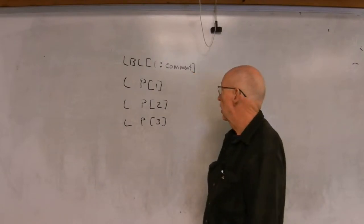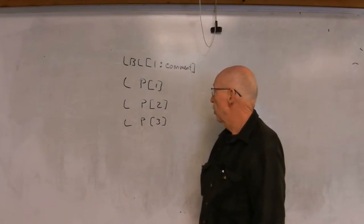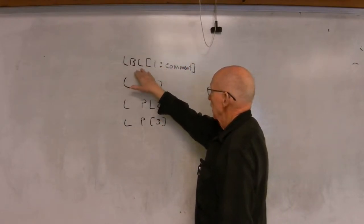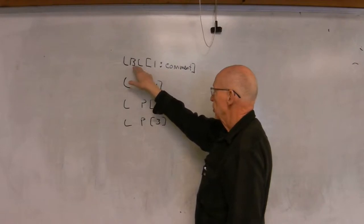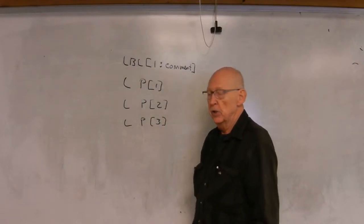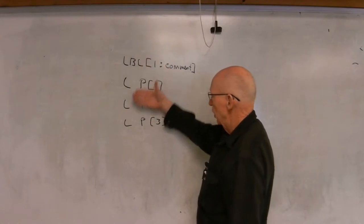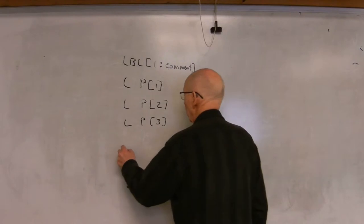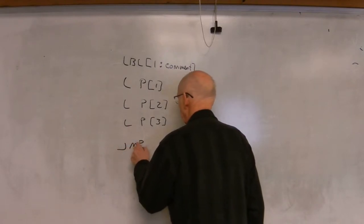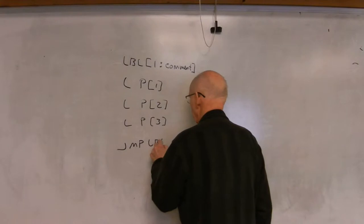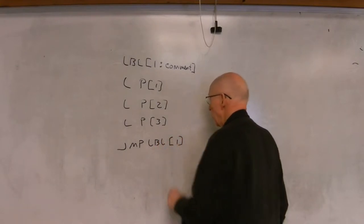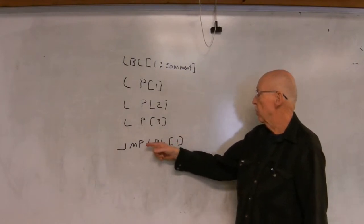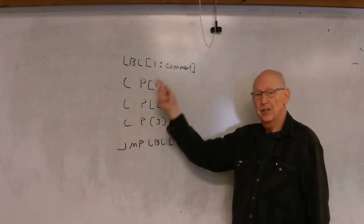So when the program executes, it doesn't really do anything, it just notes that that particular line is designated as a label. The motion instructions are executed, and then at the bottom you have this instruction: jump label one. So the program jumps back to label one and just continues indefinitely.